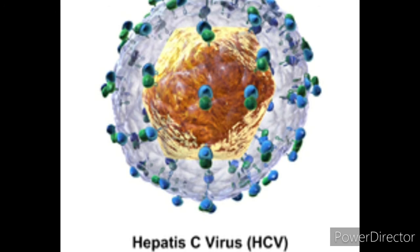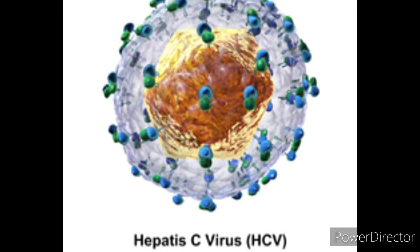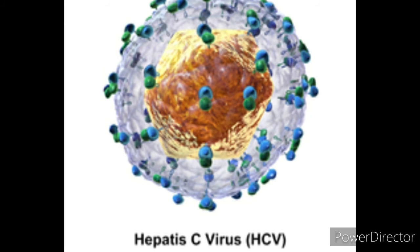There are various methods to detect HCV virus, but the HCV rapid card test is much easier and less time-consuming. Other methods include the anti-detection technique by ELISA, the REBA technique, and the molecular method RT-PCR. The rapid card test can provide results within 5 to 20 minutes.